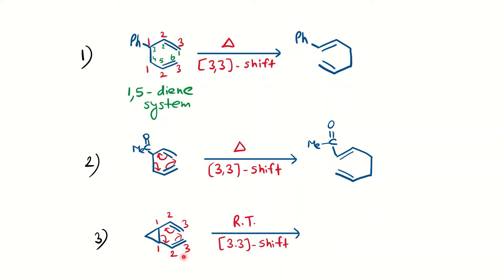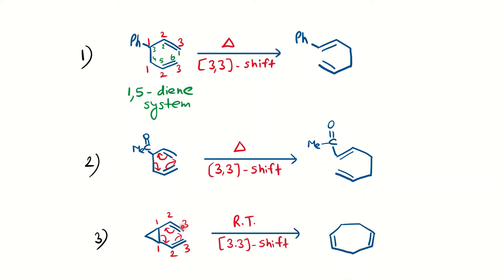Similarly, you can notice here you have two allylic systems along with the cyclopropane ring. Since it is a strained molecule, it will try to release this strain by forming the 3-3 cope rearrangement reaction. A new sigma bond is going to form between 3-3, and the 1-1 sigma bond is going to break followed by the rearrangement of the pi bond. You get the cyclic product which is the more stable 7-membered ring.